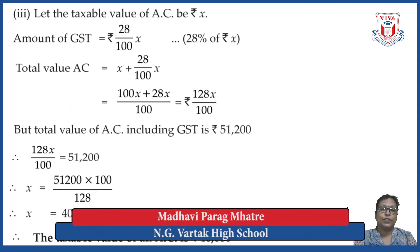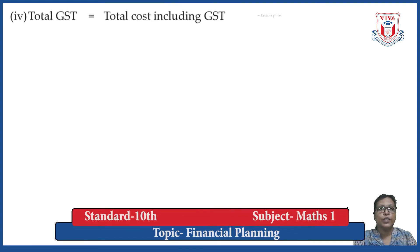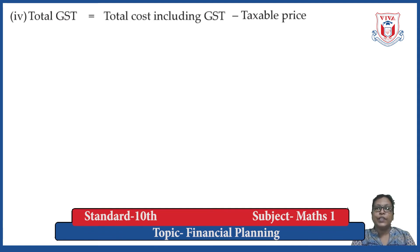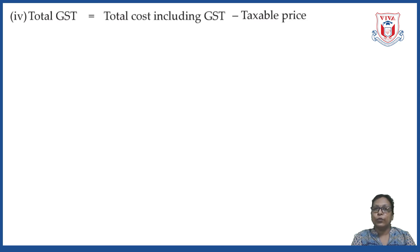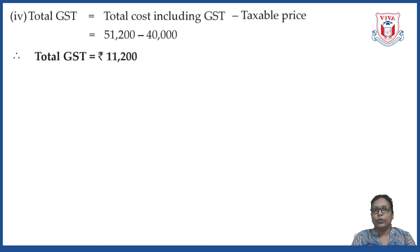Now we have to find total GST, CGST, and SGST. Total GST equals total cost including GST minus taxable price. We know both values, so: 51,200 minus 40,000 equals rupees 11,200. The fourth part is completed — we have found total GST.